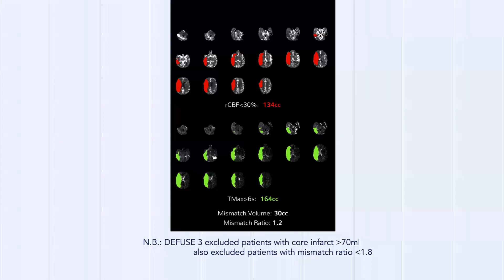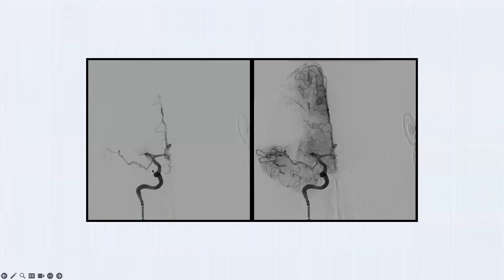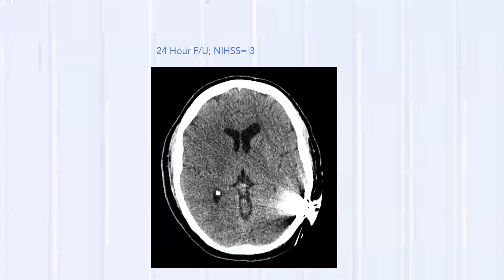What if this was a wake-up stroke? We proceeded with thrombectomy; the right MCA occlusion was opened with an excellent angiographic result. At 24-hour follow-up — despite streak artifact making the image difficult — the patient's NIH Stroke Scale went from 22 to 3. The patient did very well.